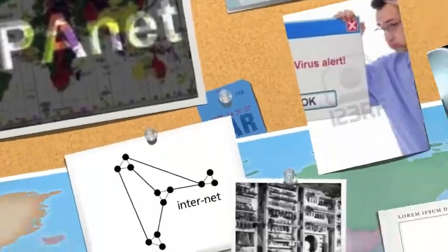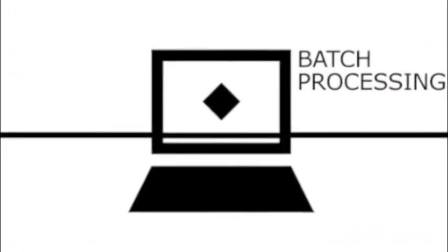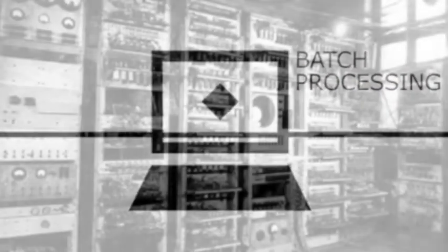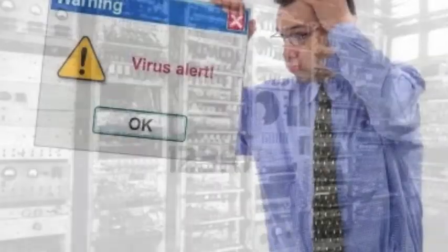Before 1957, computers could only work on one thing at a time. Batch processing was very ineffective. As computers got bigger, they had to be stored in specially cooled rooms where the developers couldn't work directly on them. So specialists had to come in to connect them.